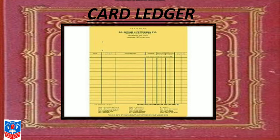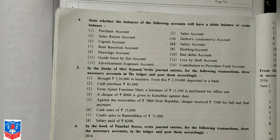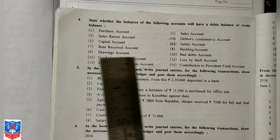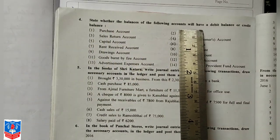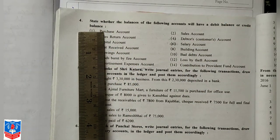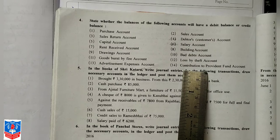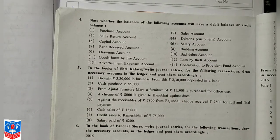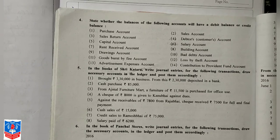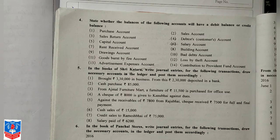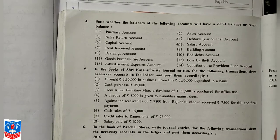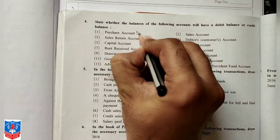Now let us move on to the practical question — Question Number 4 on page 244. The question says: state whether the balances of the following accounts will have a debit balance or a credit balance. Based on their nature, we have to decide whether each account will have a debit or credit balance. Purchase account: goods come into the business, so this will have a debit balance.